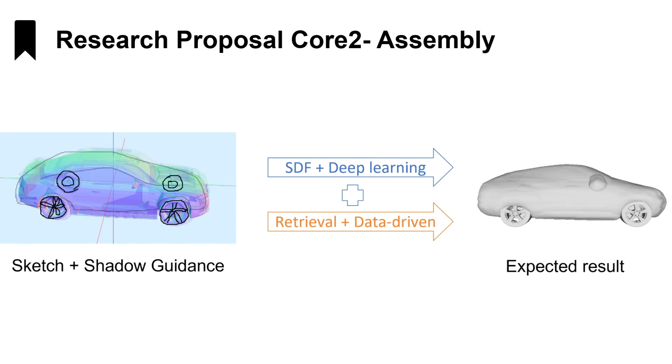Parts that pursue variety in structure can use the deep learning method, such as car shells. Parts that pursue richness in the details can use a data retrieval approach, such as car tires. The resulted part models are then assembled to get the complete model.